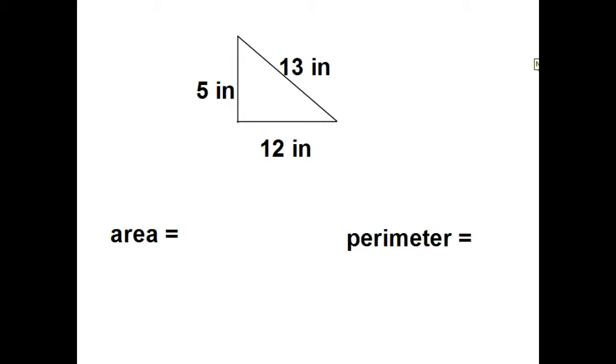Trying out the next one. Remember perimeter's just I add up all the sides. So I got a 13, a 12, and a 5. 5, 6, 7, 8, 9, 10. Carrying my 1. 30 inches all the way around.